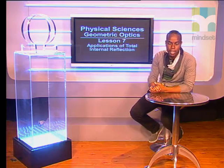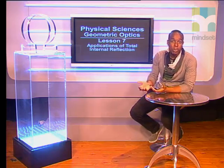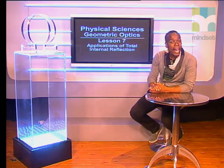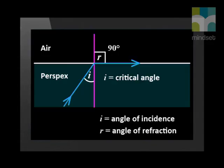Good day Grade 11s. Today we will define critical angle and look at total internal reflection. We know that when light travels towards a medium with a lower refractive index, it bends away from the normal. If we increase the angle of incidence, we will reach a critical angle where the angle of refraction is 90 degrees.